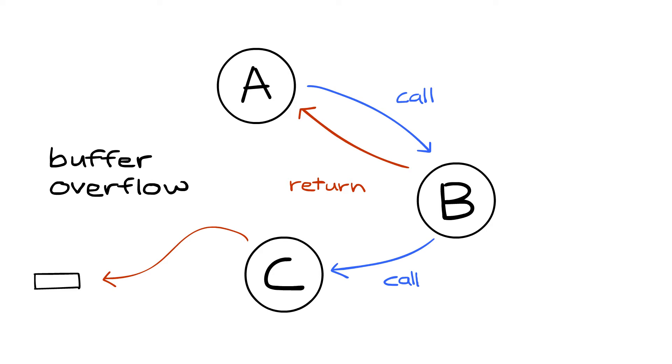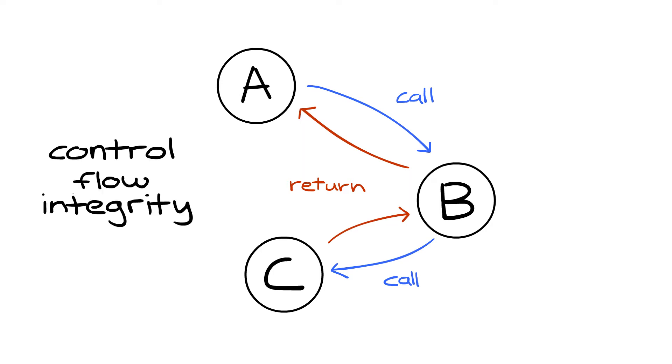We can see why this is dangerous. We get a different control flow graph than the program author intended. The shadow stack attempts to enforce what is known as control flow integrity.